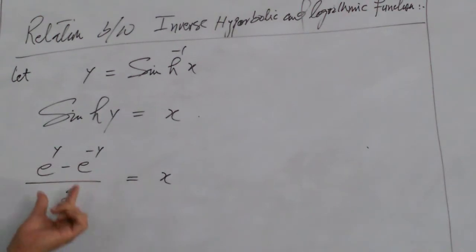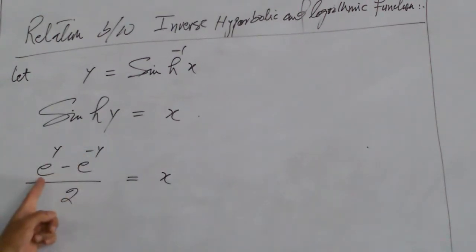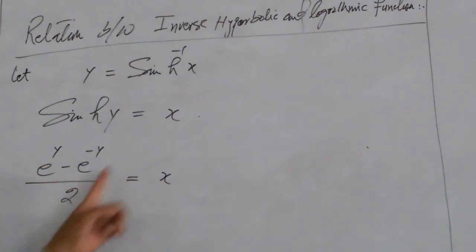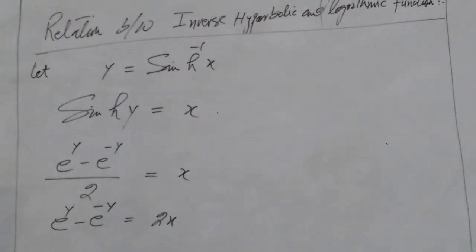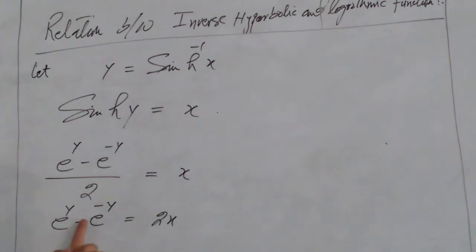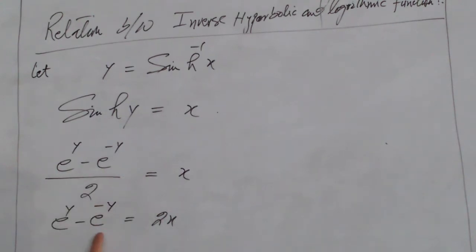By definition, sine hyperbolic of y is equal to e raised to the power y minus e raised to the power minus y, divided by 2, which is equal to x. Rearranging this equation, we have e raised to the power y minus e raised to the power minus y is equal to 2x.